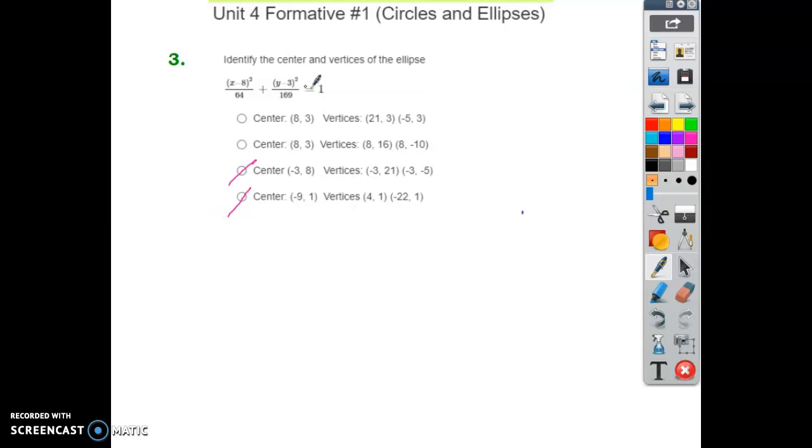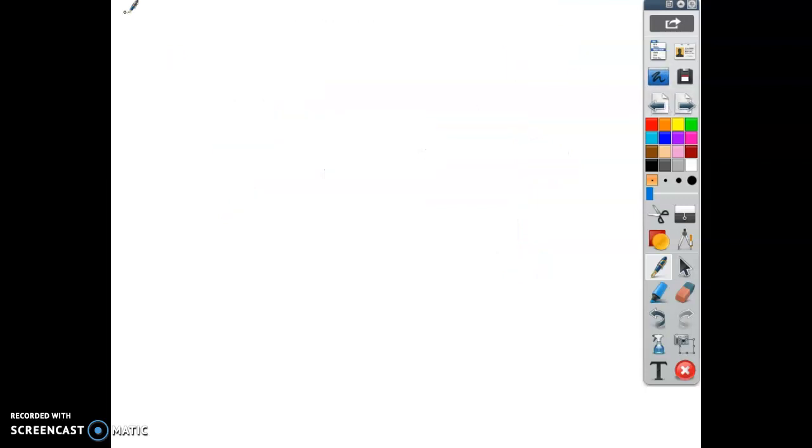So now the major axis is going to be the y-axis. And it's going to be from the center, which is at 8, 3. We're going to go up 13 and down 13 to get your vertices. So those points will be at 8, and then 3 plus 13, and then 8, and then 3 minus 13. So that makes them right here. And I think that is it. Peace out.